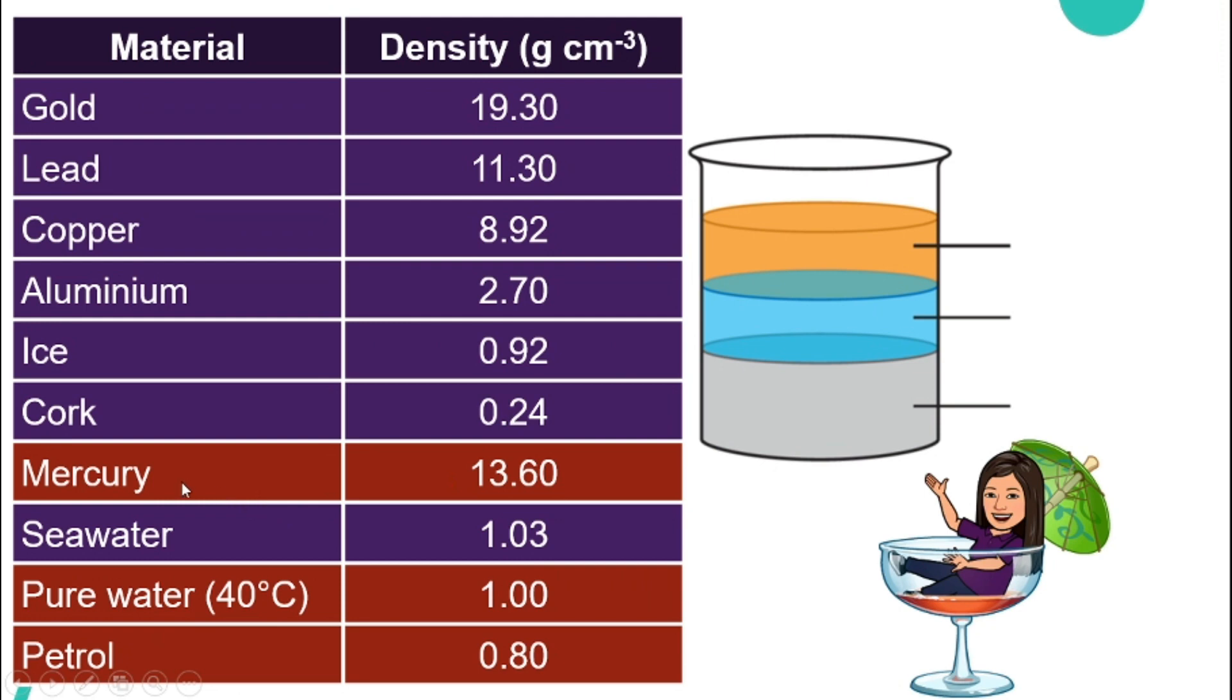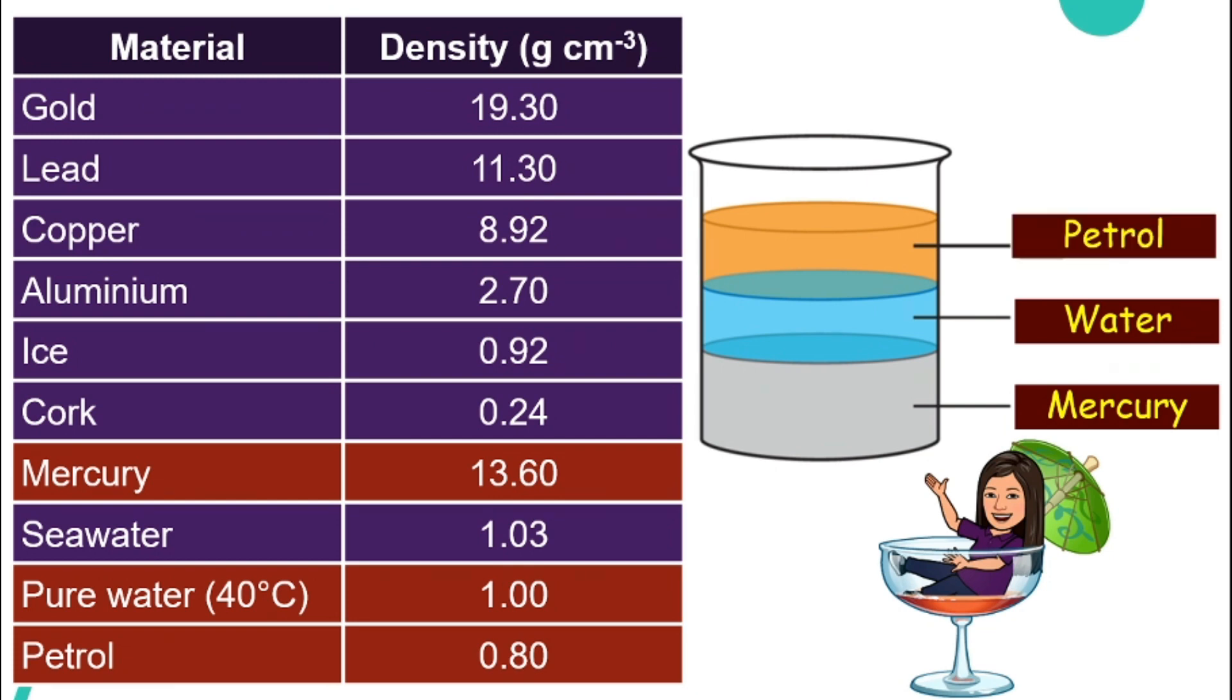Let's look at the density of mercury, pure water and petrol. The density for mercury is of the highest number, the biggest number. That means it has the highest density. So mercury will be the one at the bottom. Then let's compare pure water and petrol. Petrol is slightly less dense compared to pure water. So we have pure water in the middle and petrol on top.